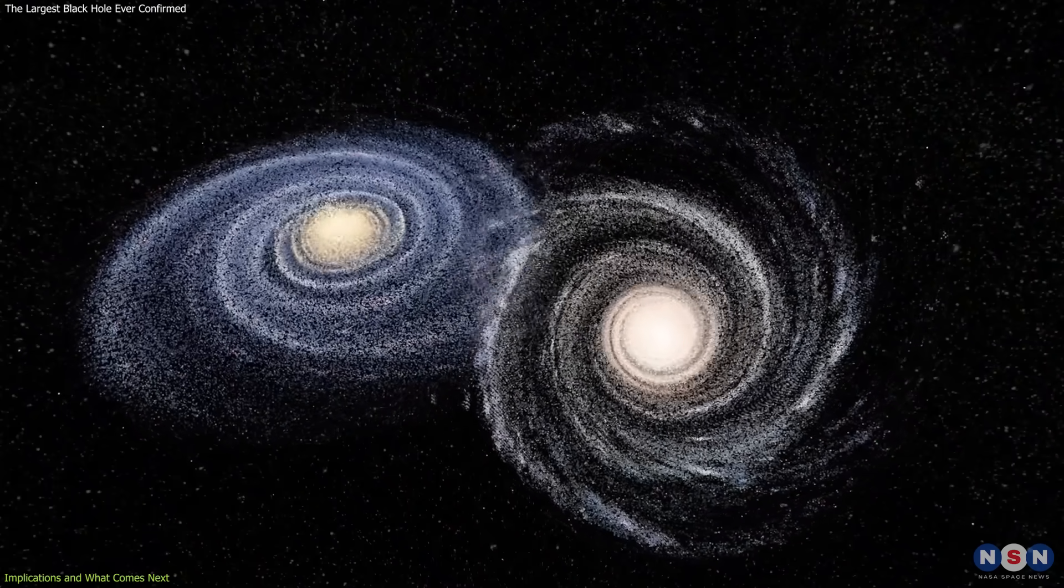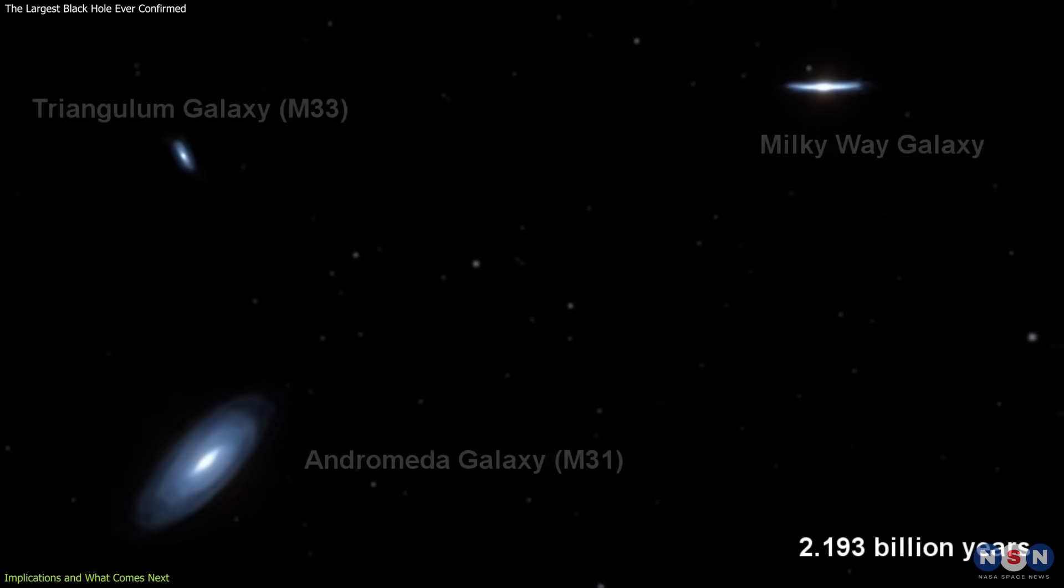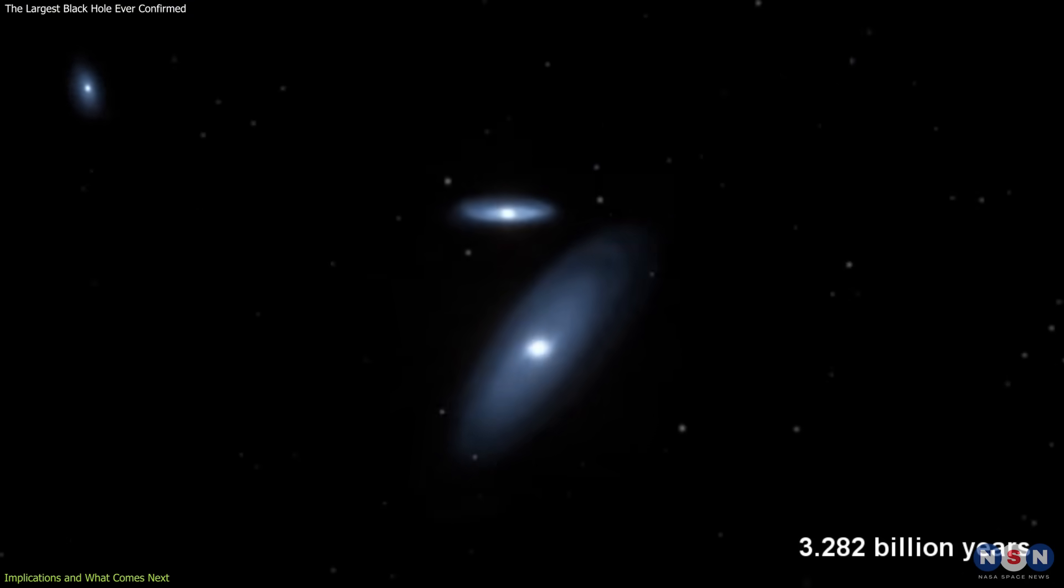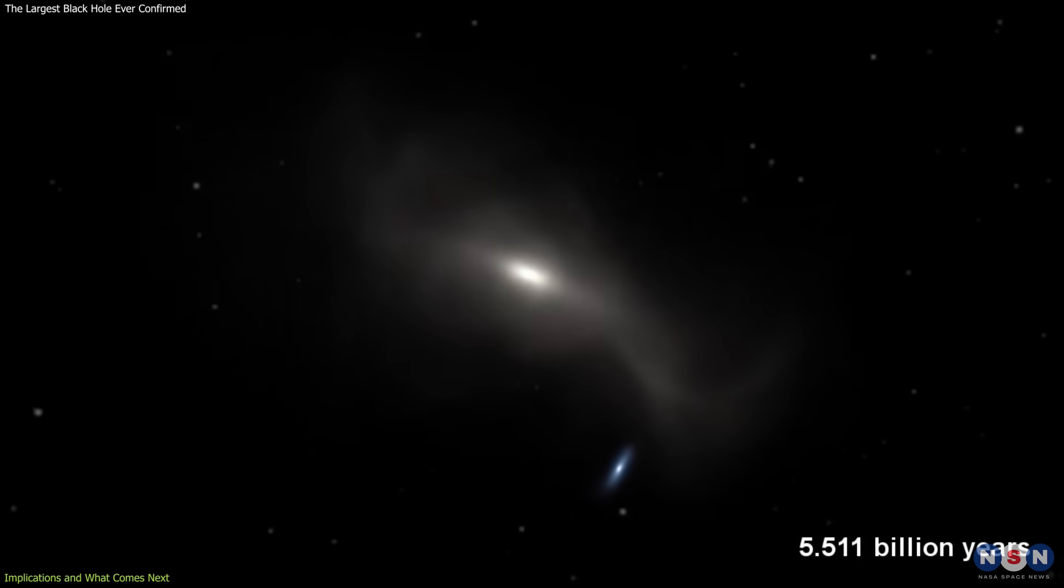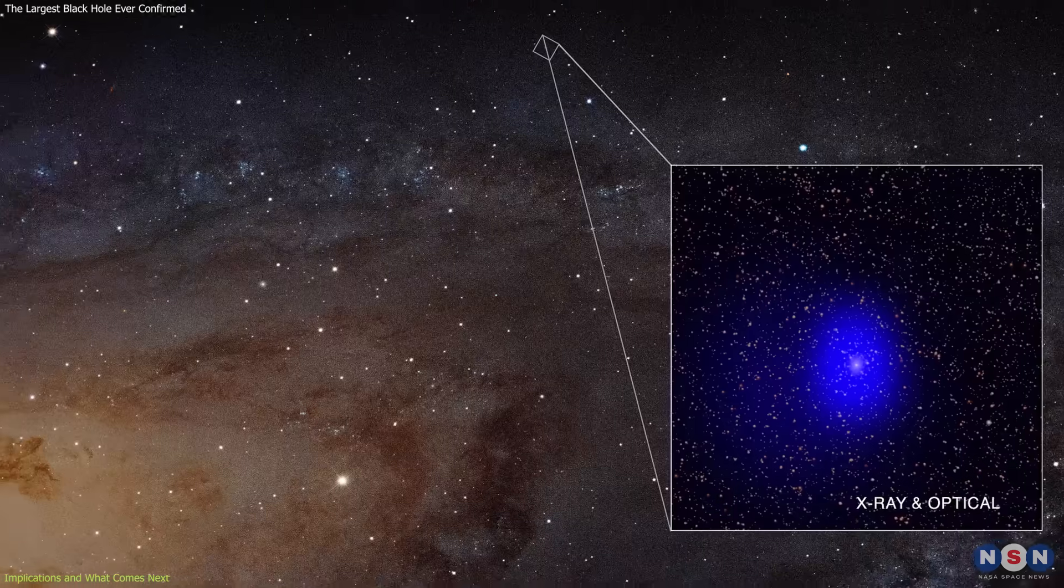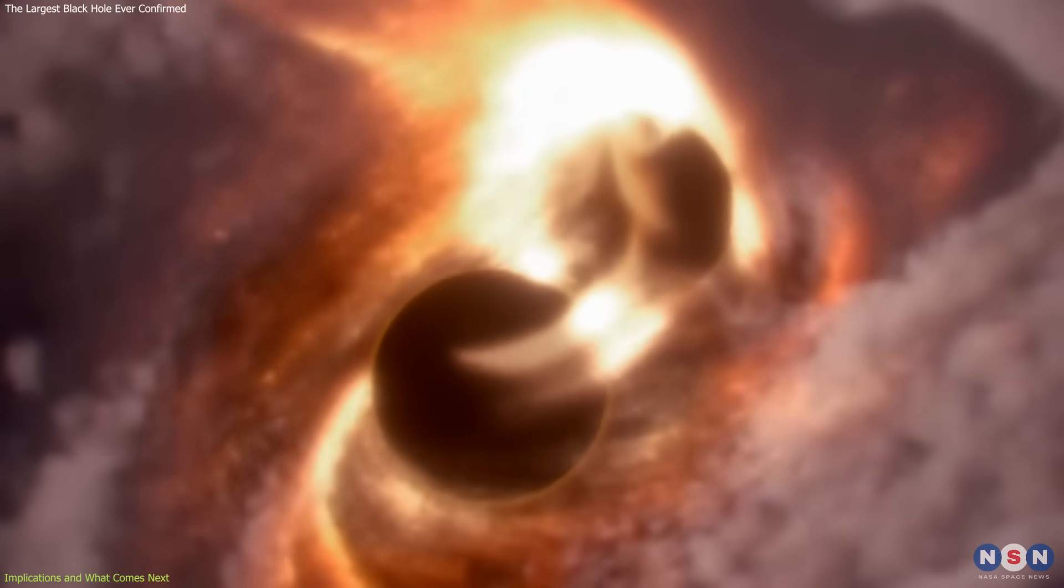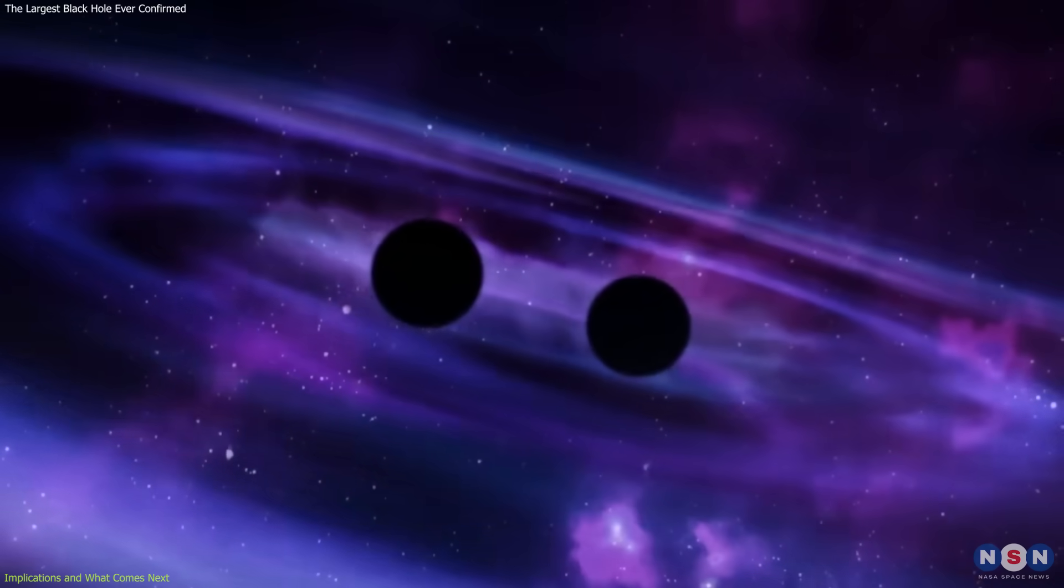Second, it points to the role of cosmic mergers. Our own galaxy is on track to merge with the Andromeda galaxy in about 4.5 billion years. When that happens, their central black holes—currently a few million suns in the Milky Way and over 100 million in Andromeda—will eventually merge into a far larger one. It offers a glimpse of what repeated mergers over billions of years can produce.